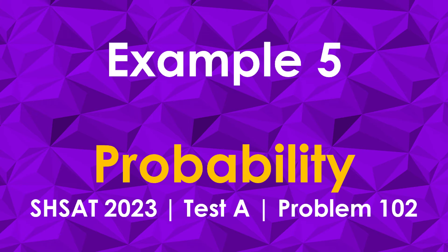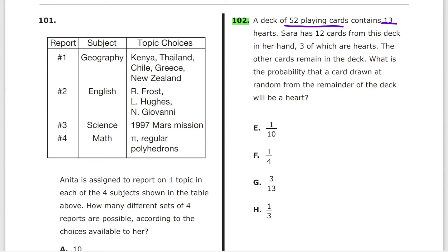Problem 102, Test A. A deck of 52 playing cards contains 13 hearts. Sarah has 12 cards from this deck in her hand, three of which are hearts. The other cards remain in the deck. What's the probability that a card drawn at random from the remainder of the deck will be a heart? You got 52 playing cards total, but Sarah has 12 of these cards, so the total is really 40 cards now. There are 13 hearts, but she already has three cards in her hand, so the remaining is 10. So the probability remaining for the heart to be selected is 10 over 40, which is 1 over 4, which is F.